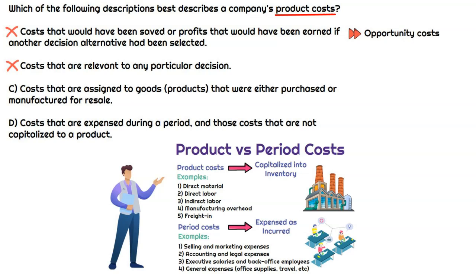Option three says 'costs assigned to goods or products that were either purchased or manufactured for resale' — that is describing product costs, because we're talking about the goods themselves that will be sold to the end customer. That's the correct answer. Option four says 'costs that are expensed during a period and not capitalized to a product' — those are operating expenses, period costs. Costs that are not capitalized to a product are period costs, not product costs. Make sure you know the difference between period and product costs.